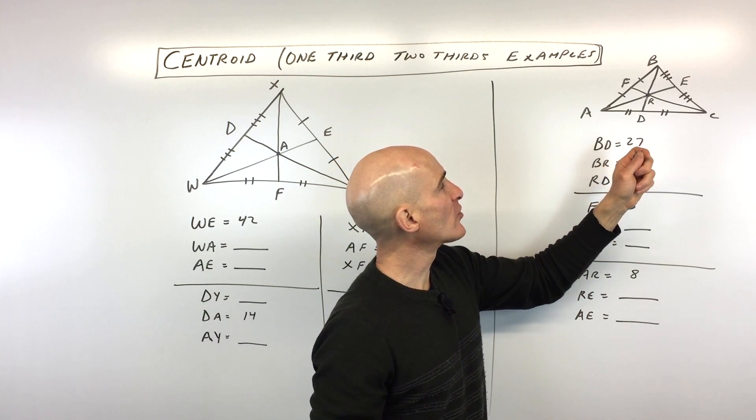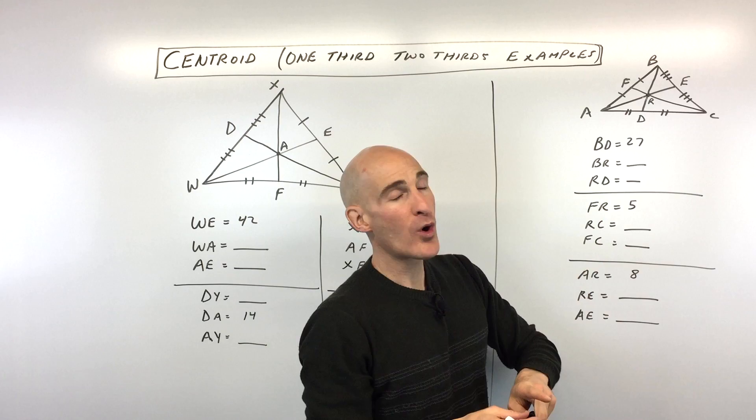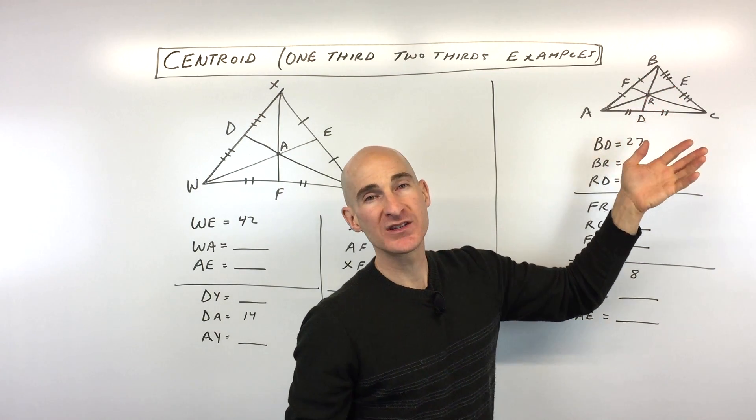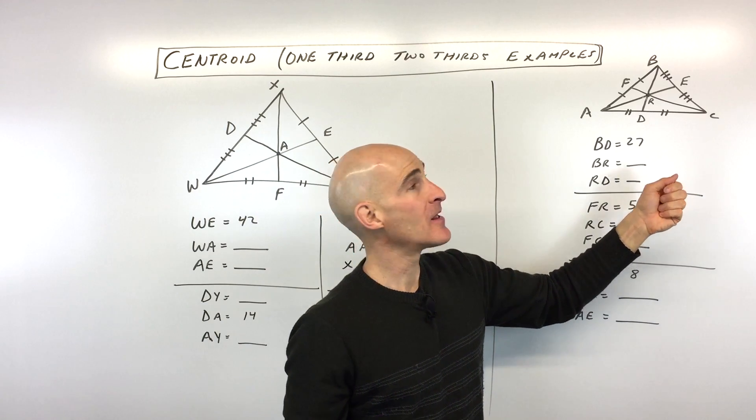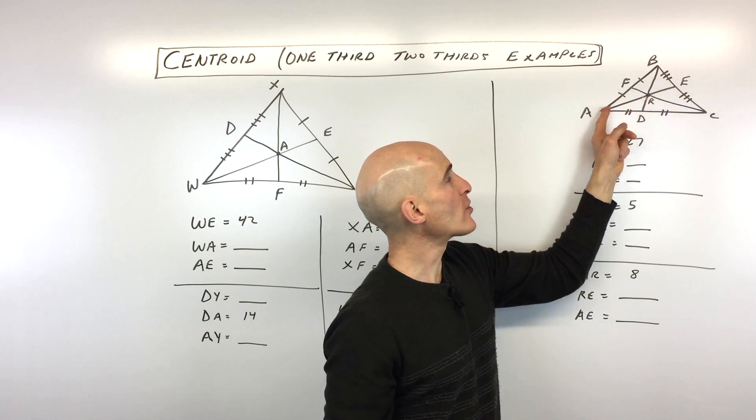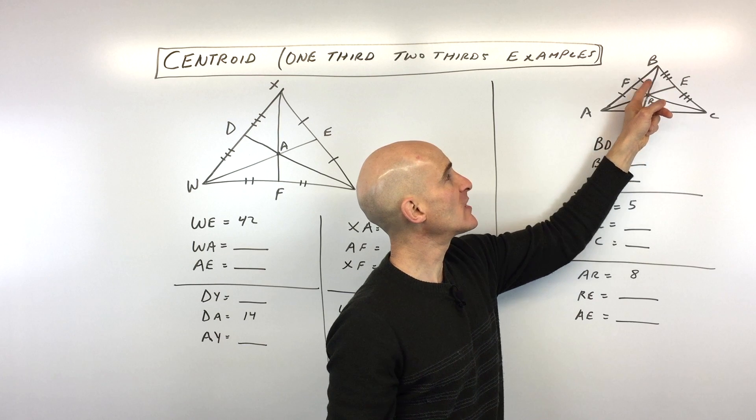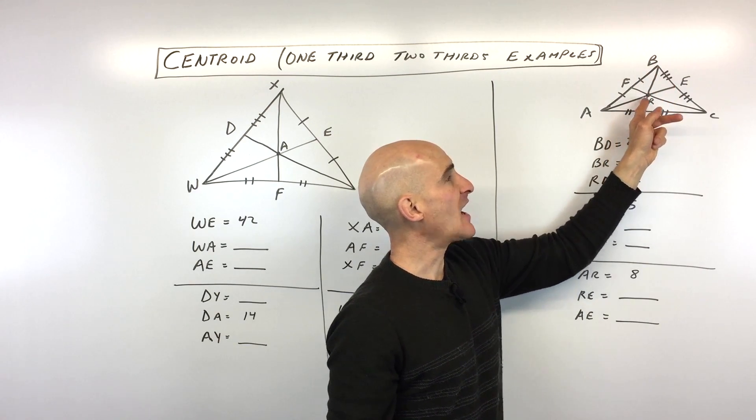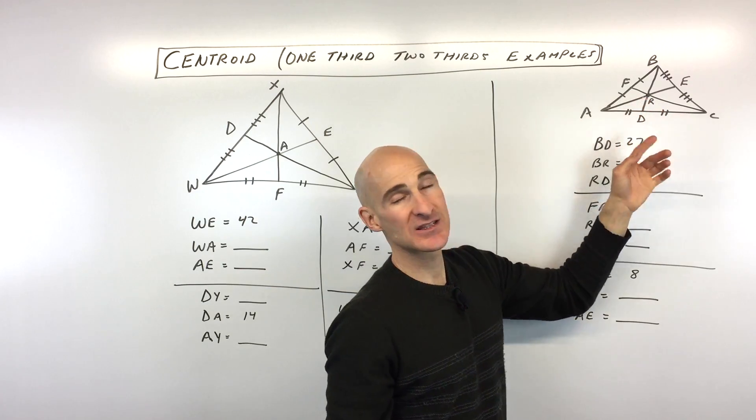The other thing that I want to mention to you real quick is that sometimes students are wondering, if it's not obvious from the picture, which distance is the one-third distance and which is the two-thirds distance, right? Well, when you're measuring from the vertex, so the corner of the triangle from the vertex to the centroid, that's going to be the two-thirds part. The part from the opposite side to the centroid, that's going to be the one-third part.